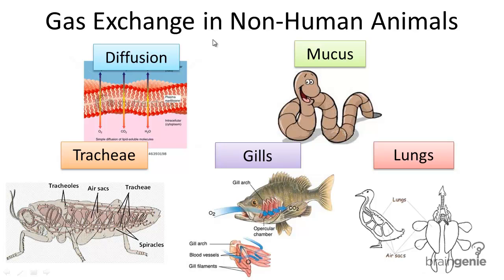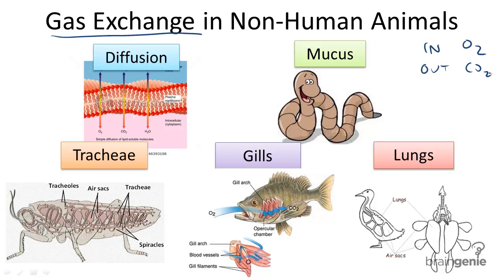Let's compare gas exchange in non-human animals. Gas exchange is the process of taking in valuable oxygen to the cells for aerobic respiration and eliminating carbon dioxide, the waste product of aerobic respiration. Gas exchange occurs in order to promote aerobic respiration and get energy as ATP. It occurs in several ways in animals.